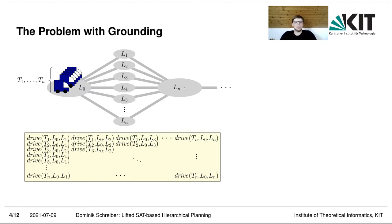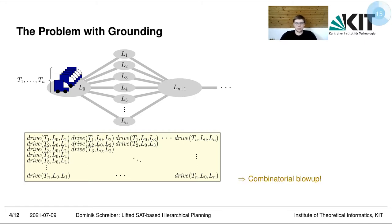If we ground this problem, we get a matrix of many different actions because we instantiate all possible parameter combinations — driving with truck 1 from L0 to L1, from L0 to L2, and so on for each of the trucks. We can easily see that this leads to a combinatorial blowup in input size.